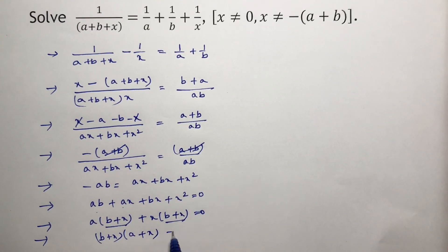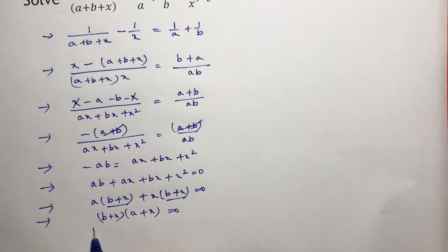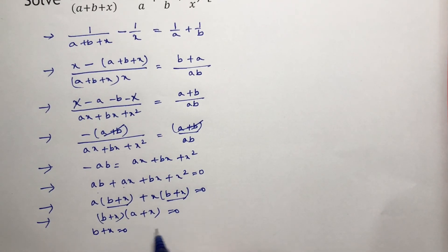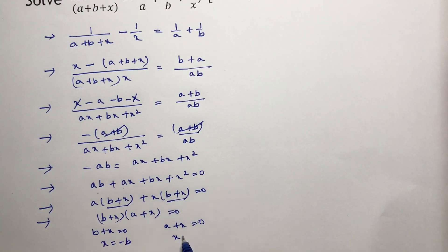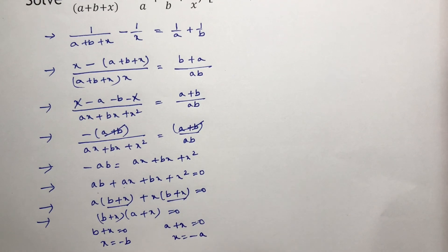b plus x equals 0 and a plus x equals 0. So x equals minus b and x equals minus a.